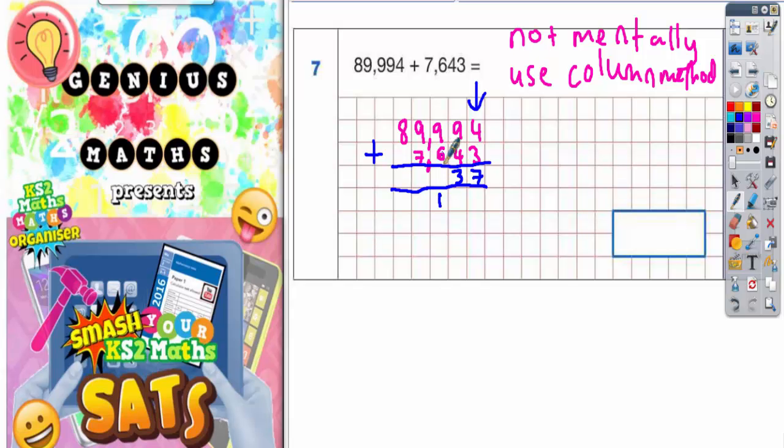9 plus 6 is 15 plus that 1 is 16. Put the 6 in, carry the 1. 9 plus 7 is 16, plus 1 is 17. So the answer is 97,637.